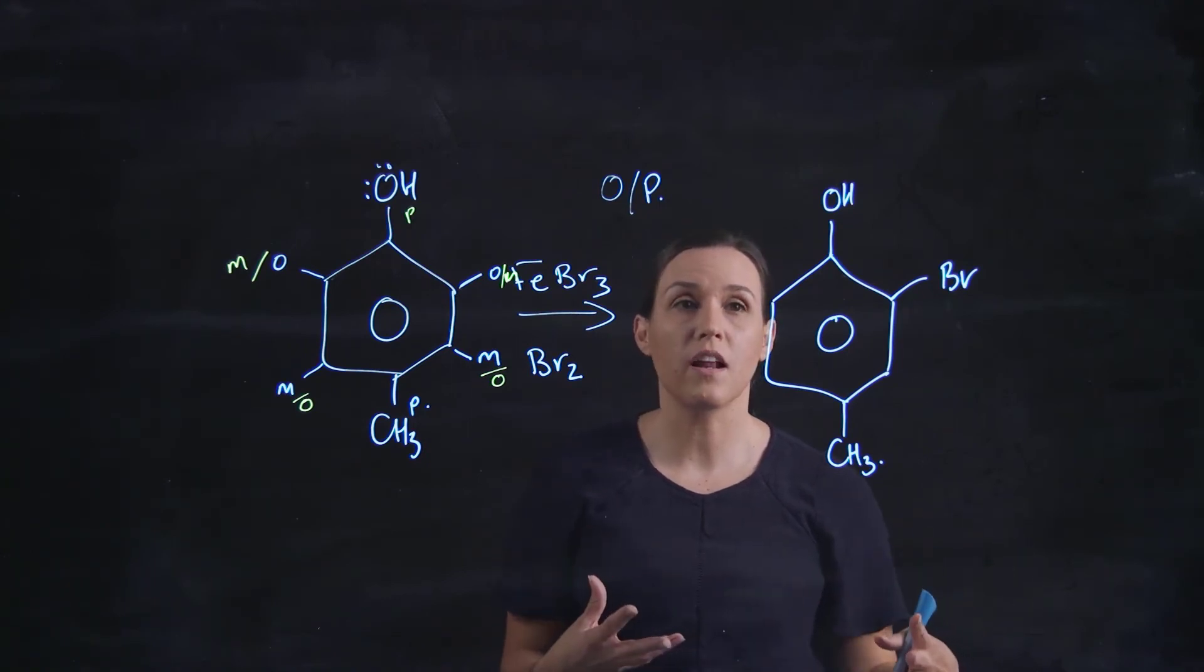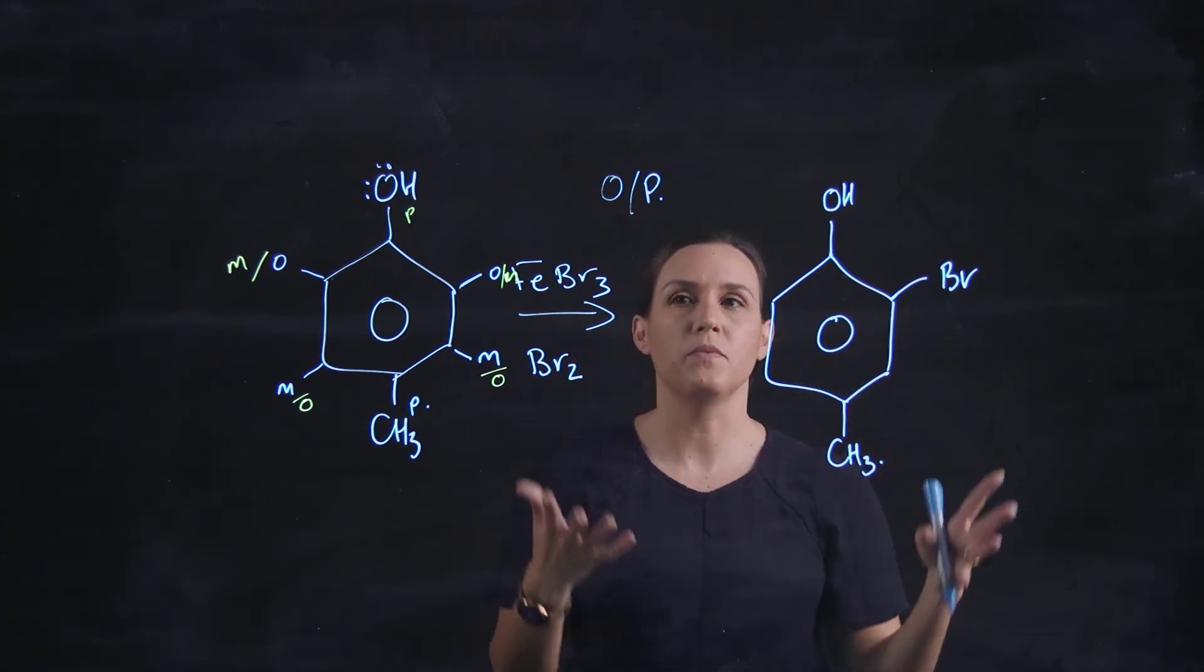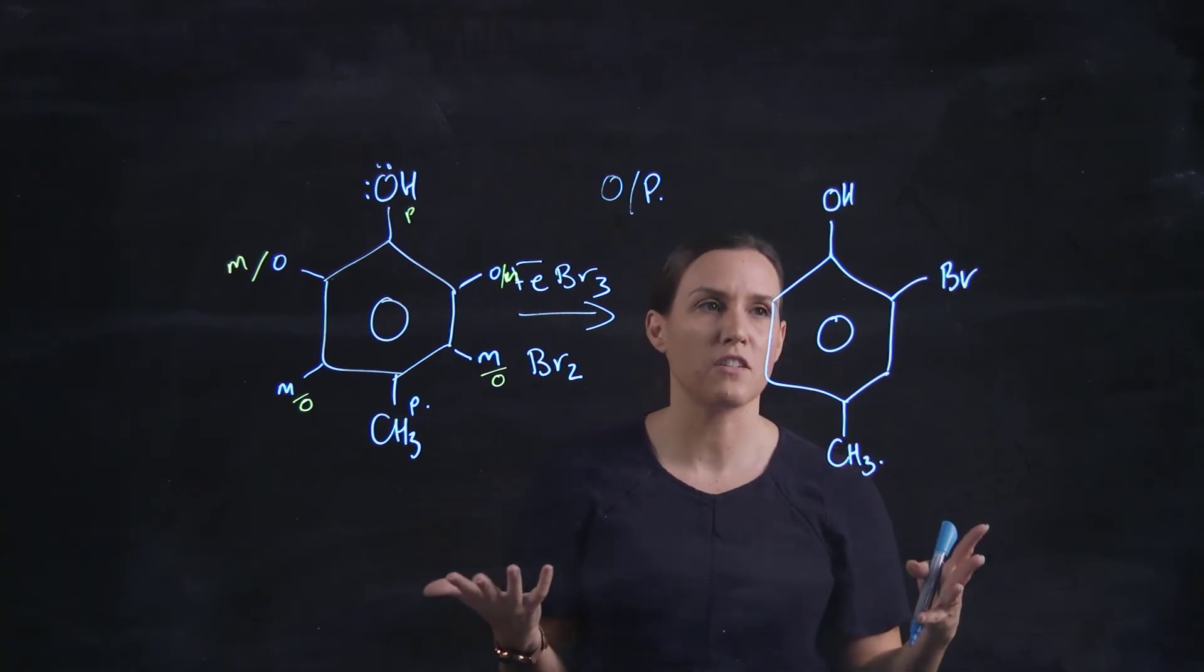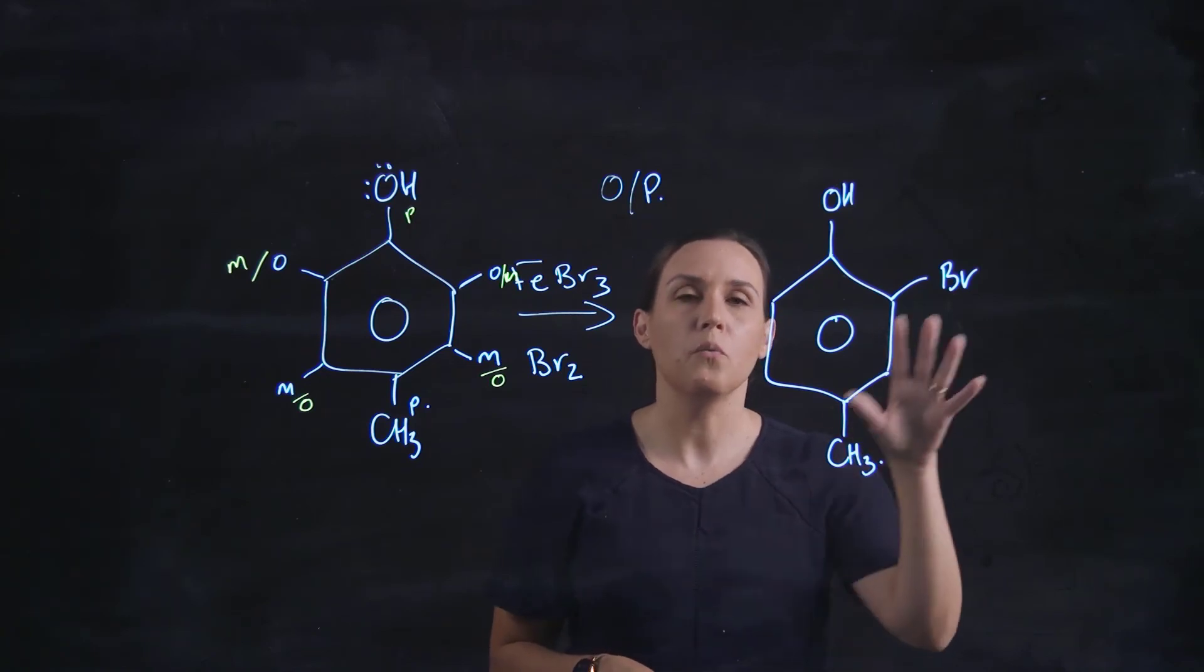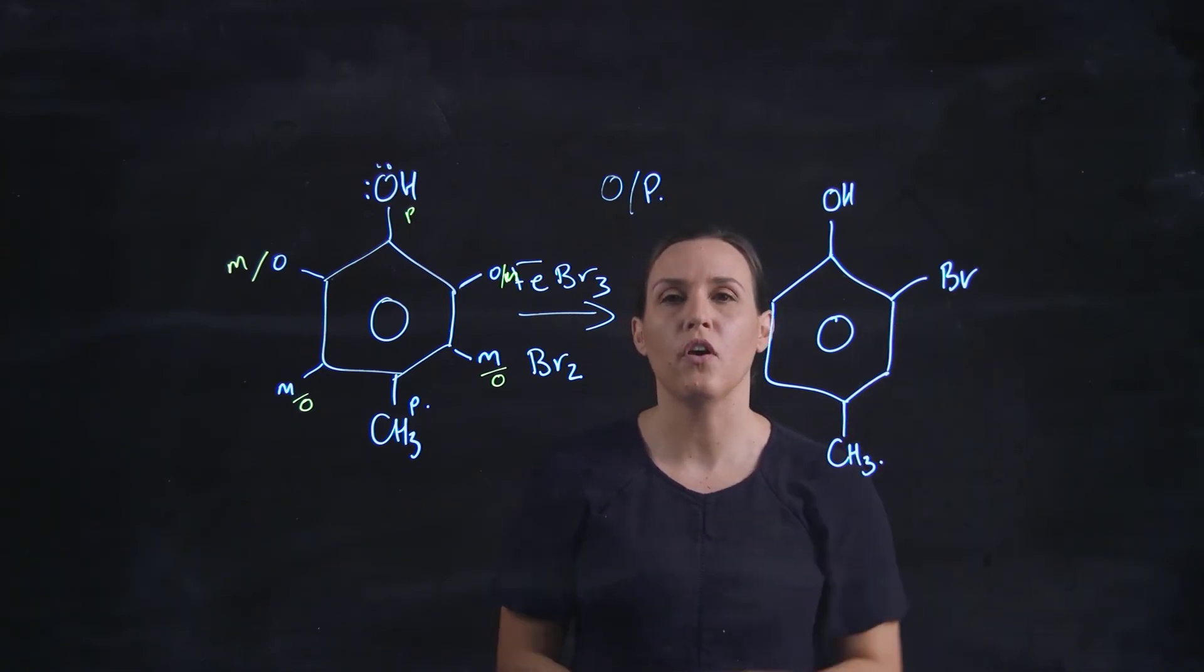There would be also a combination of products, so you may get depending on how long and how much the reaction was left you might get bromination occurring in all of the positions. But simply putting one bromine on there it would occur in the ortho position to that alcohol.